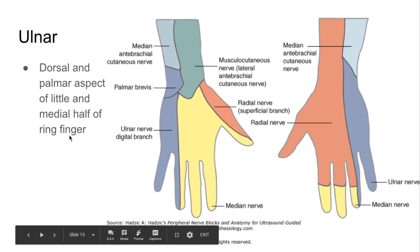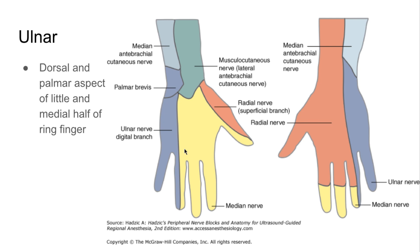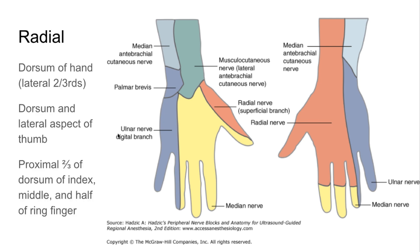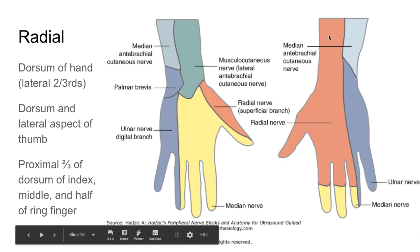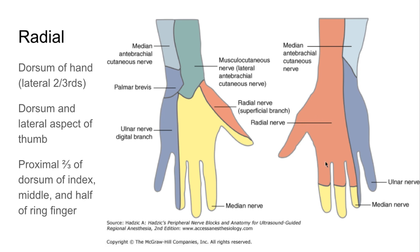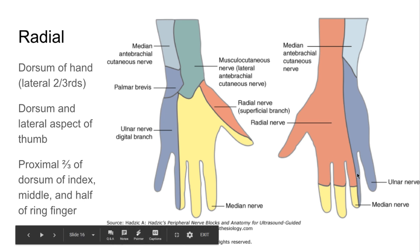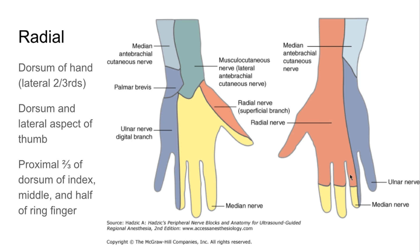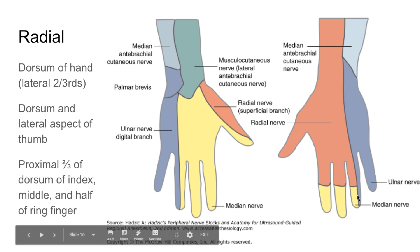On the dorsal aspect, the median nerve covers the distal third of the index, middle, and lateral half of the ring finger. If they say medial half of the ring finger, you're thinking ulnar nerve. For example, if a patient says whenever they rest their elbow on the car window while driving, their pinky goes numb — that's because they're compressing the ulnar nerve. The ulnar nerve supplies the medial forearm and the pinky and medial half of the ring finger. For radial nerve, it covers the dorsum of the hand — the lateral two thirds — the dorsum and lateral aspect of the thumb, and the proximal two thirds of the dorsum of the index, middle, and half of the ring finger. The ring finger is the junction of radial, ulnar, and median nerve on the dorsum.